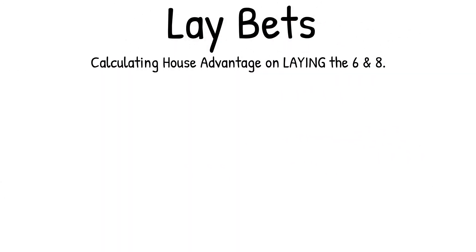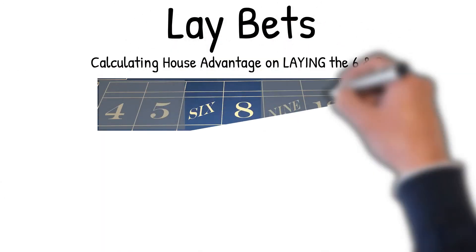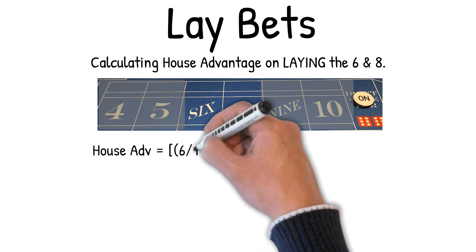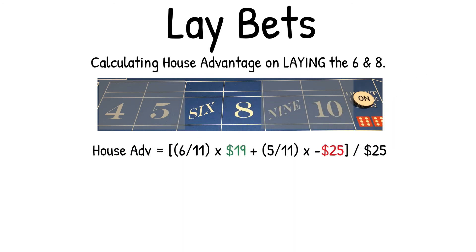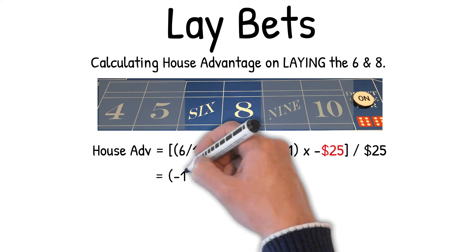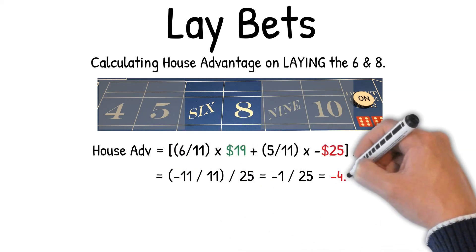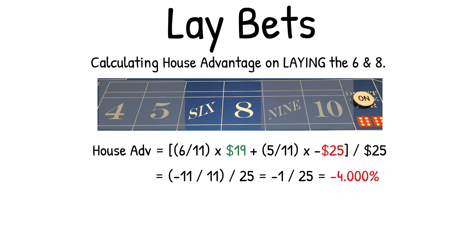Calculating house advantage on laying the six and eight. House advantage equals: 6/11 × $19 + 5/11 × (−$25), over $25. This equals (−11/11) / 25, which equals −1/25, which equals −4% house advantage.